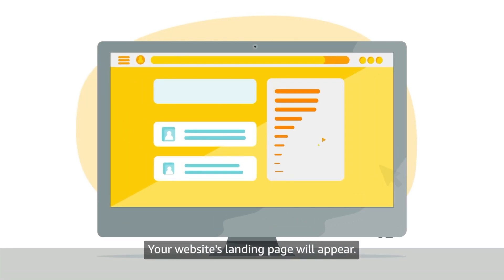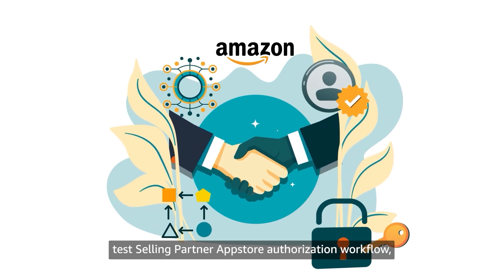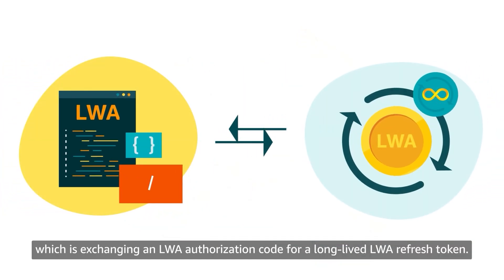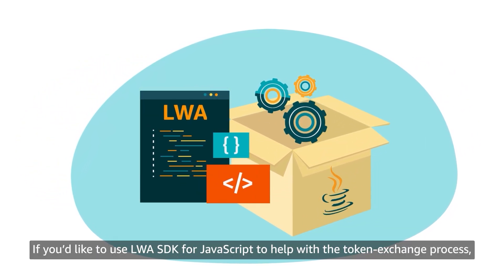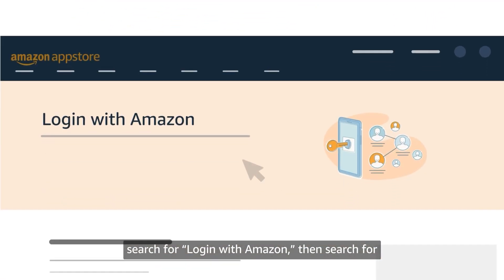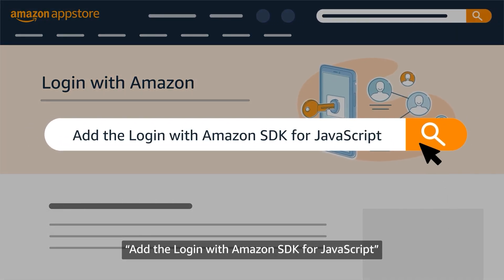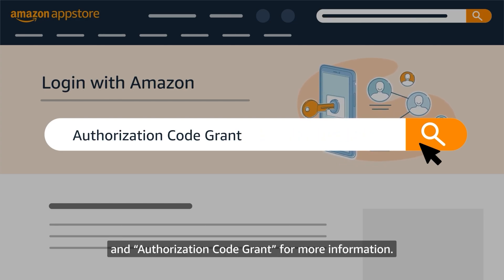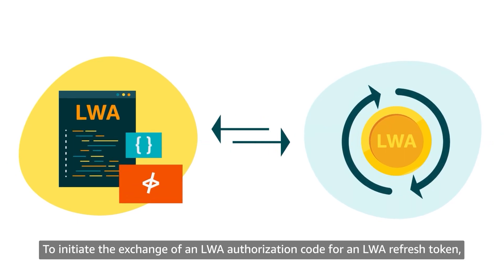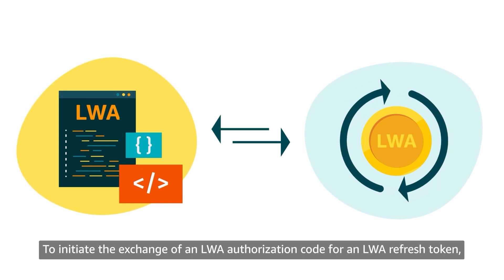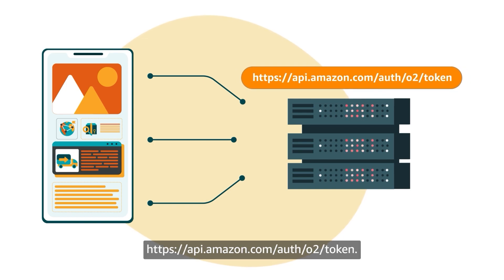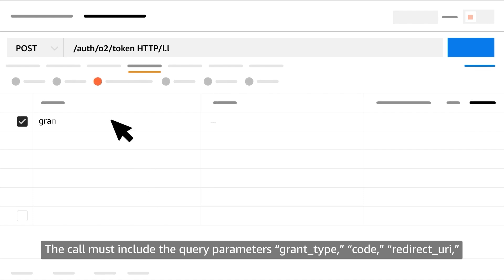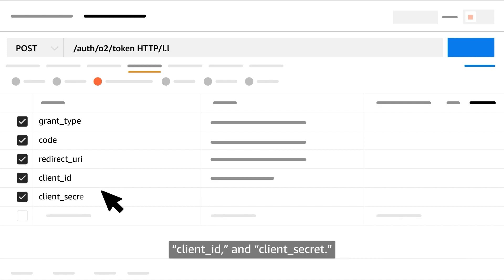Now let's review the last part of the Test Selling Partner App Store authorization workflow: exchanging an LWA authorization code for a long-lived LWA refresh token. If you'd like to use the LWA SDK for JavaScript to help with the token exchange process, search for Login with Amazon, then search for 'Add the Login with Amazon SDK for JavaScript and Authorization Code Grant' for more information. To initiate the exchange, have your application call the LWA authorization server at https://api.amazon.com/auth/o2/token. The call must include the query parameters: grant_type, code, redirect_uri, client_id, and client_secret.